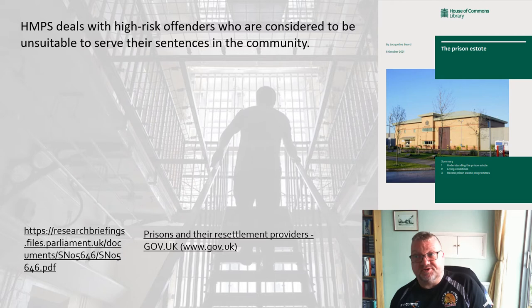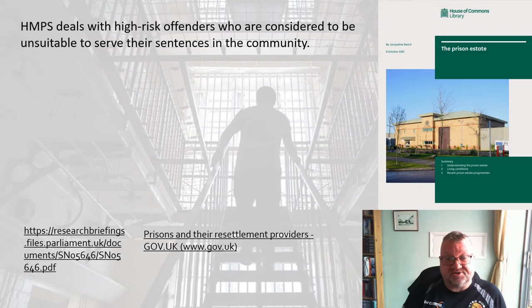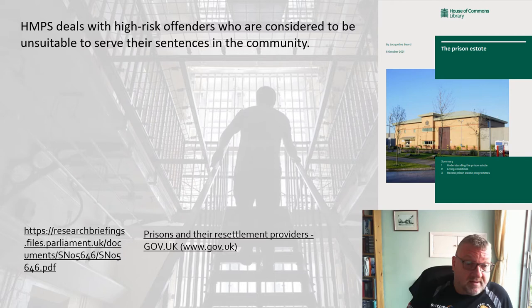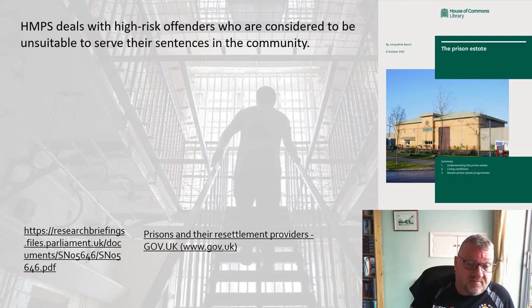The prison system deals with high-risk offenders who are considered unsuitable to serve their sentences in the community. We know that 95% of cases tend to go through the magistrates courts, and magistrates have a maximum prison sentence of six months, or a year for two or more offences. So the majority of people in prison will have come from the crown courts, serving longer periods of time, and they're higher risk.